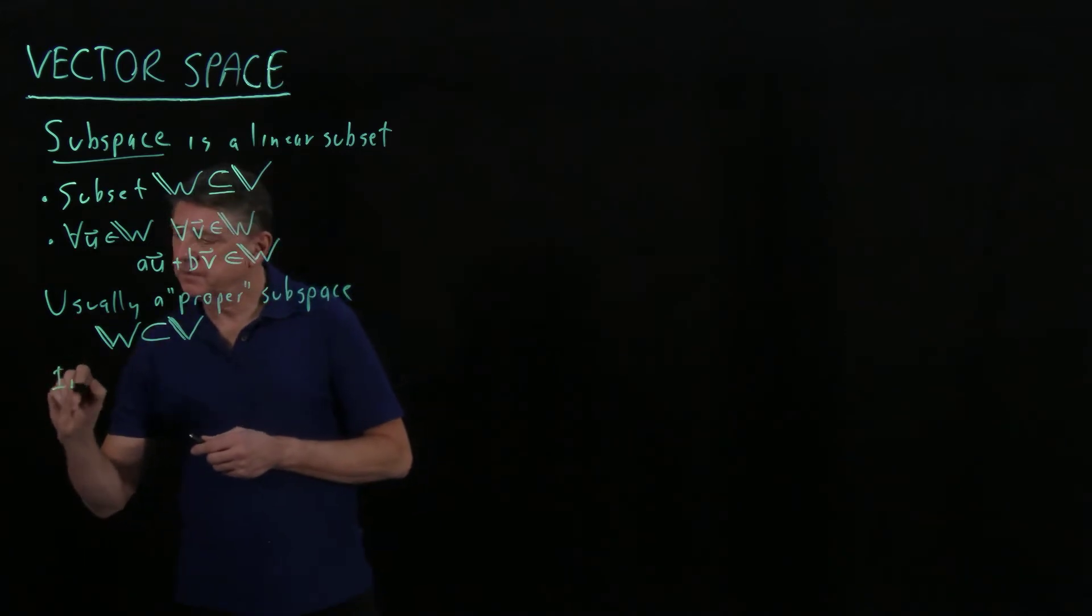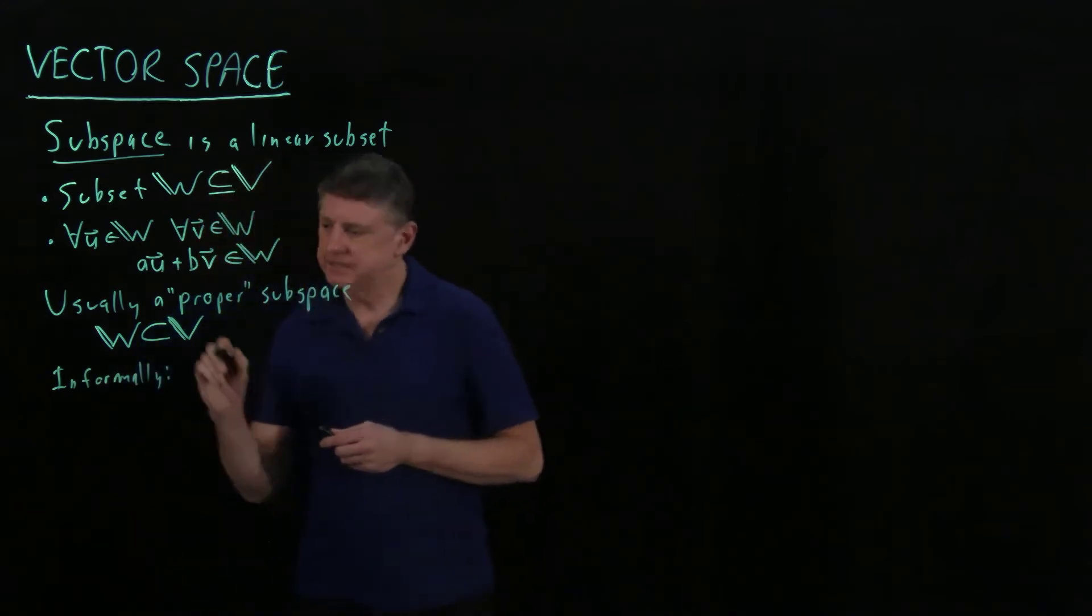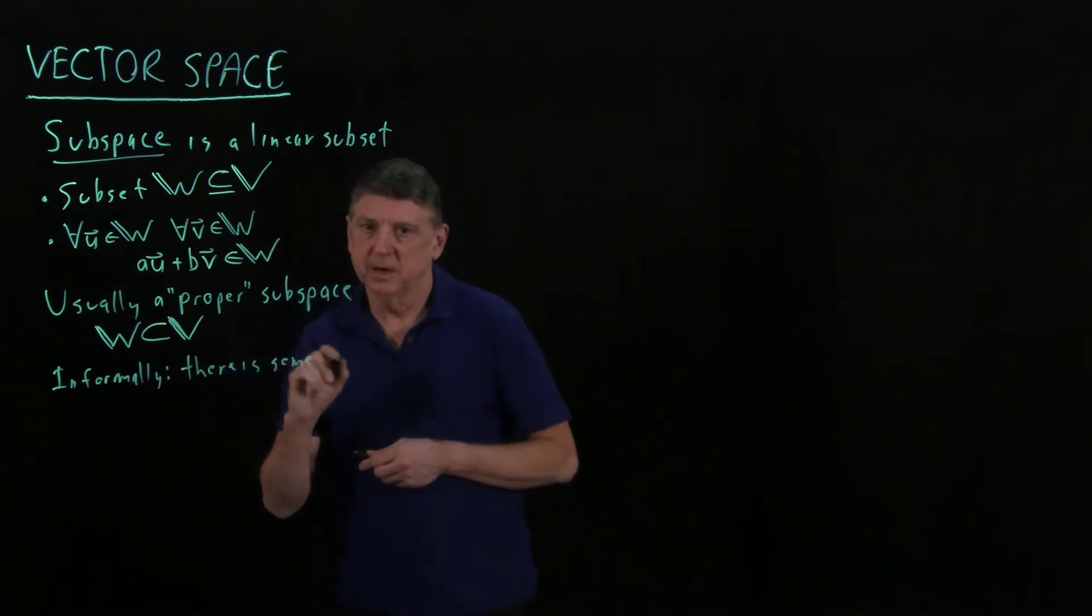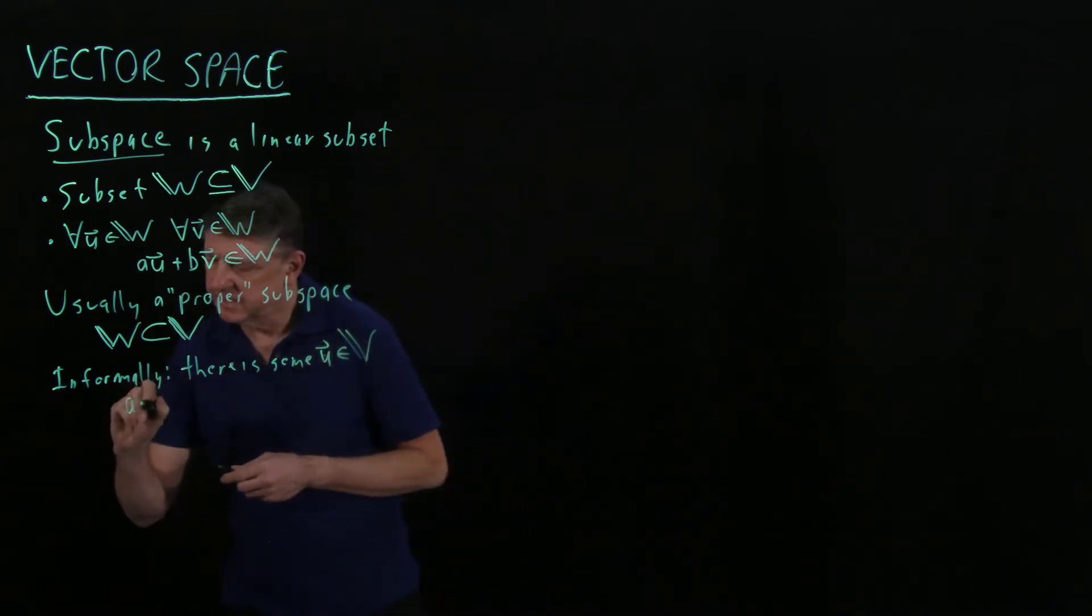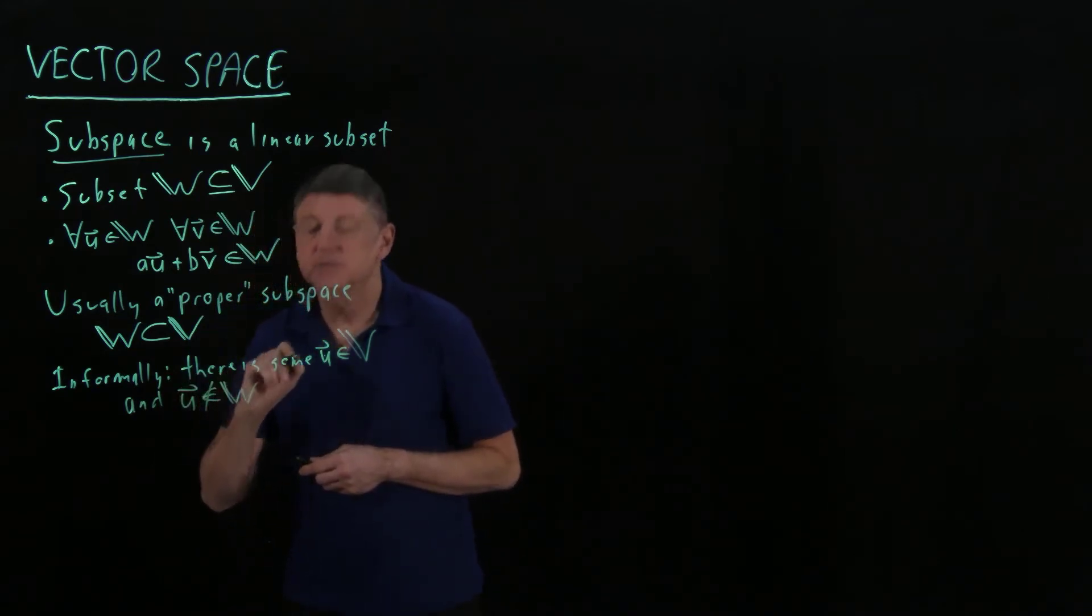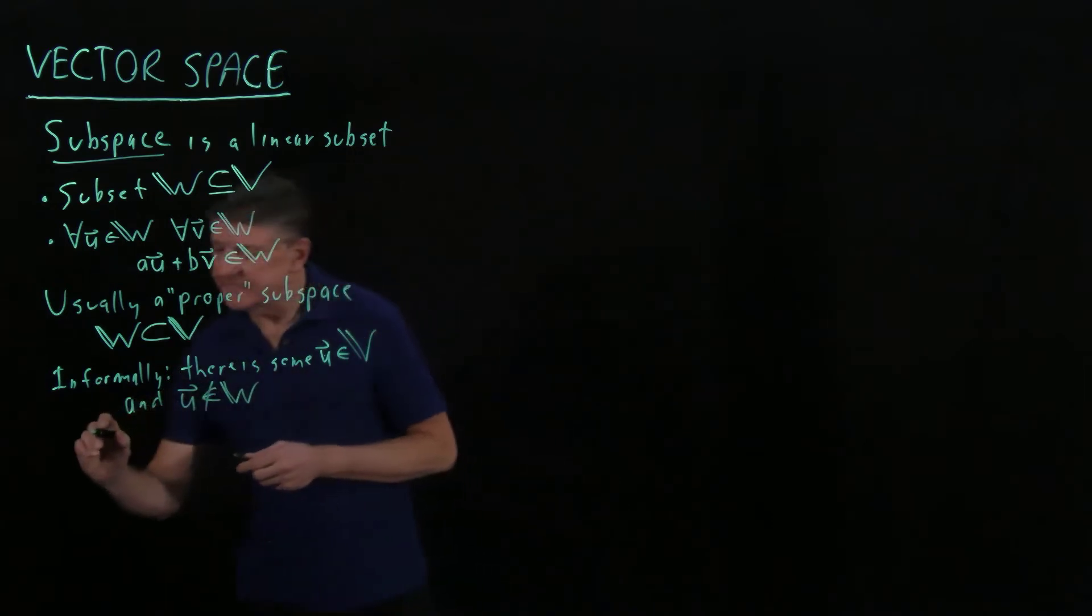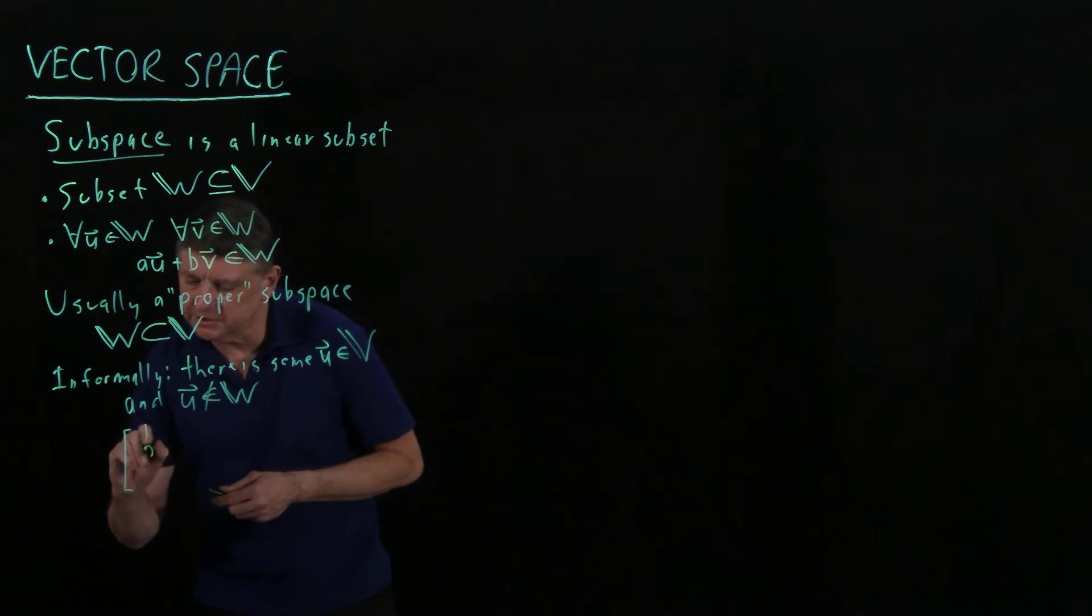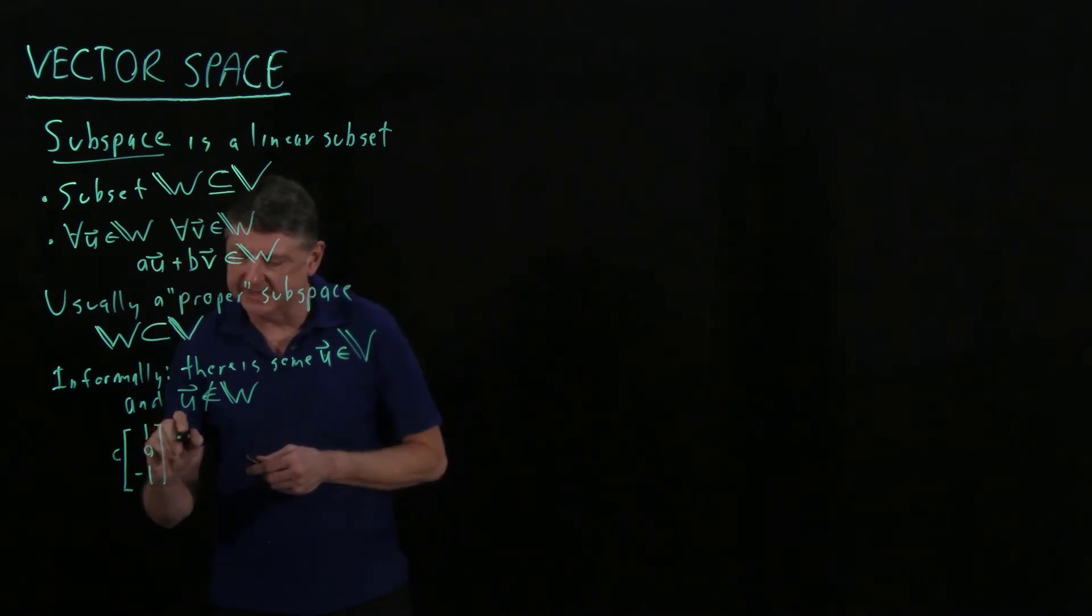So informally, what we can say, informally, is there is some vector, let's say u, that is in the bigger space, and u is not in the subspace that we're looking at. So example, suppose we have a vector which is 1, 0, minus 1, and we say any constant multiple of that is in a vector subspace.